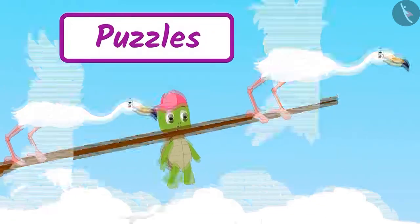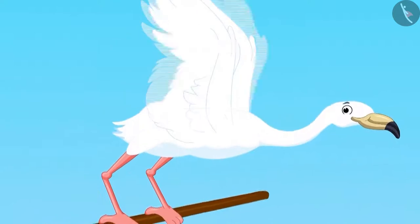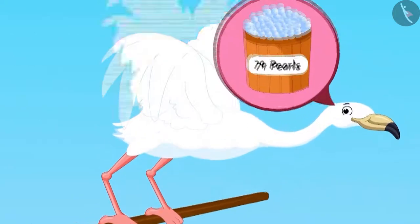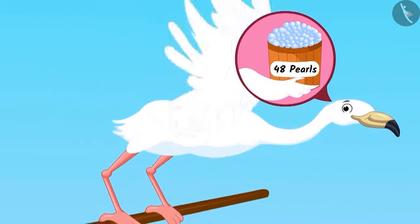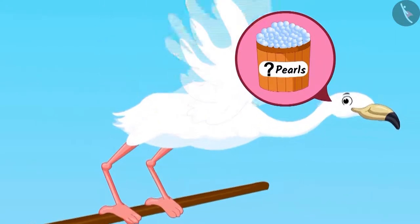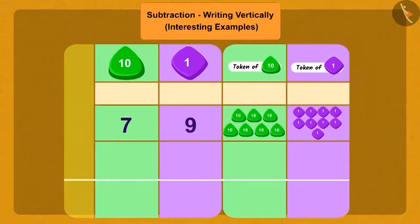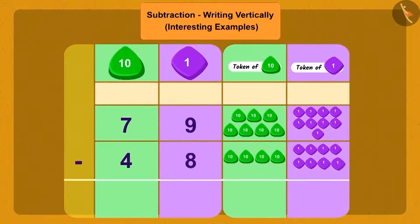They had to travel a long distance and birds thought that they would ask each other puzzles. One bird asked another, I have 79 pearls and I gave you 48 pearls, then how many pearls are left with me? Tell me children, how will the bird solve this puzzle? Yes, to know the number of pearls left, the bird must subtract 48 beads out of 79 beads.